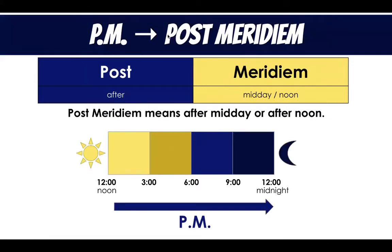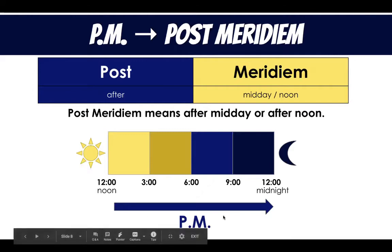P.m. stands for post-meridium. "Post" is our prefix and means "after" - just like you take a post-test after you've learned all the content. And "meridium," again, means midday or noon. So, post-meridium means after midday or after noon. So our p.m. times, our post-meridium times, are from noon all the way until midnight.